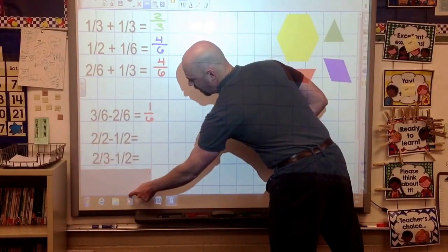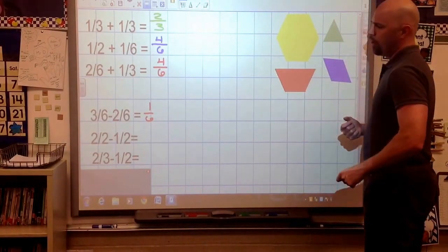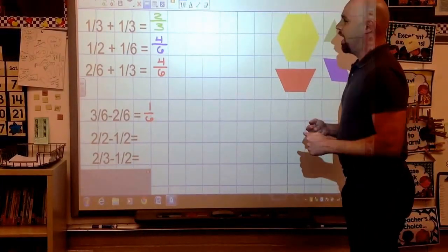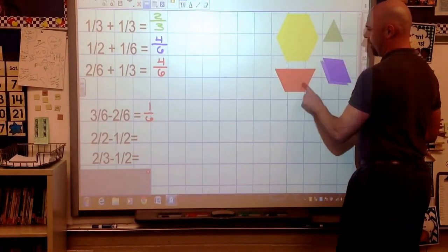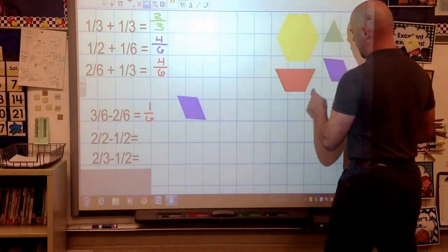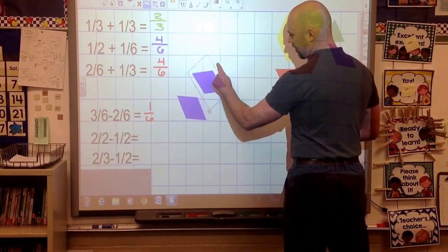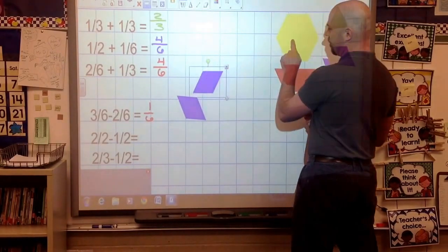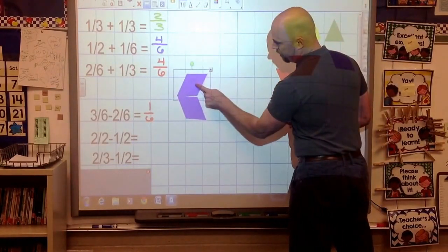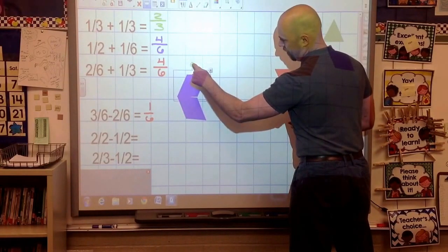And let's jump down to a more difficult one down at the bottom. 2/3 minus 1/2. Well, here's a third, and here's a third. And like I said, whenever I use these pieces, I try and build them like I'm building towards my one whole. So there's my side I'm trying to build with that hexagon.